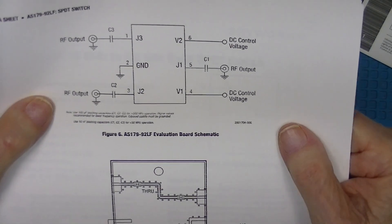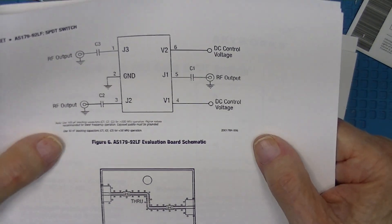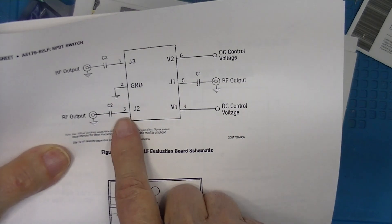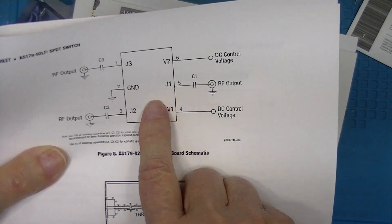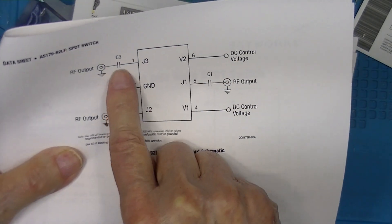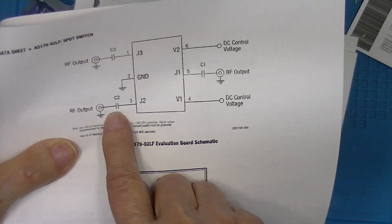Here's Skyworks' recommended wiring diagram, and you'll notice that the inputs or outputs, whichever way you're feeding it, all have a capacitor.